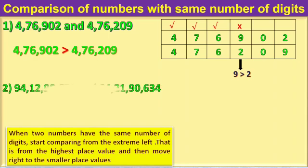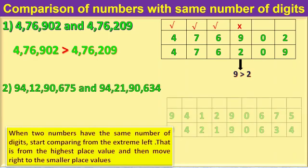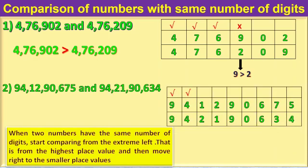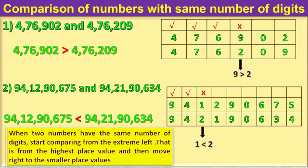In the second example, digits at the 10 crores place and crores place are the same, but digits at the 10 lakhs place are different. That is, 1,10 lakhs is smaller than 2,10 lakhs. Therefore, 94 crore 12,90,675 is smaller than 94 crore 21,90,634.